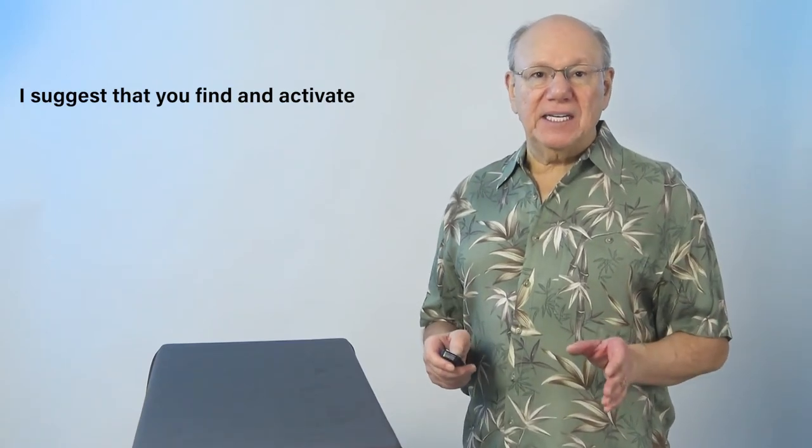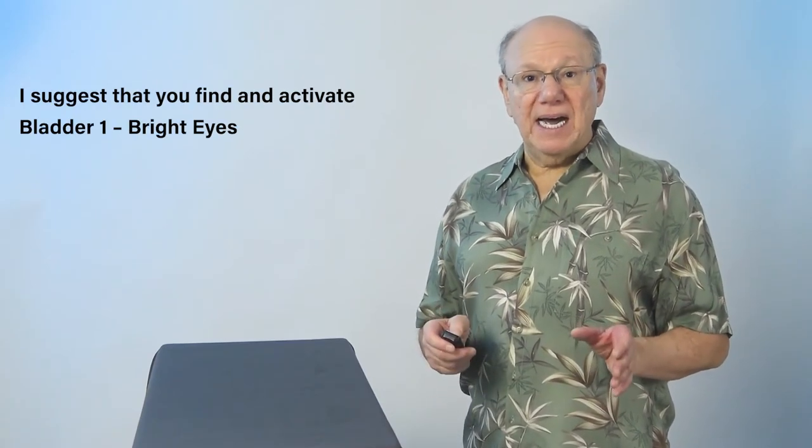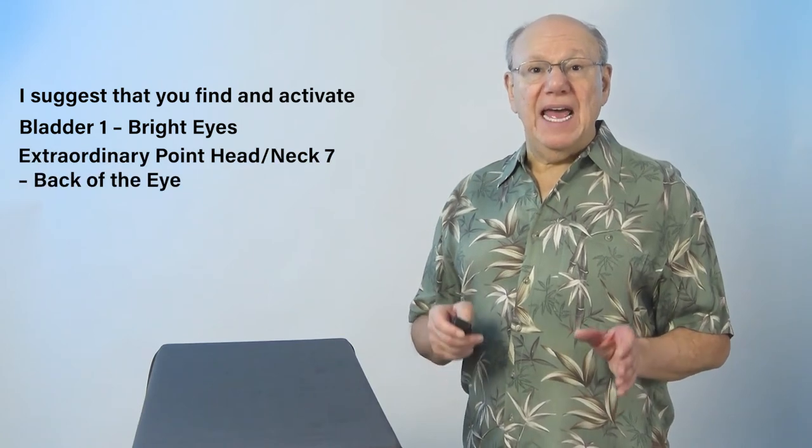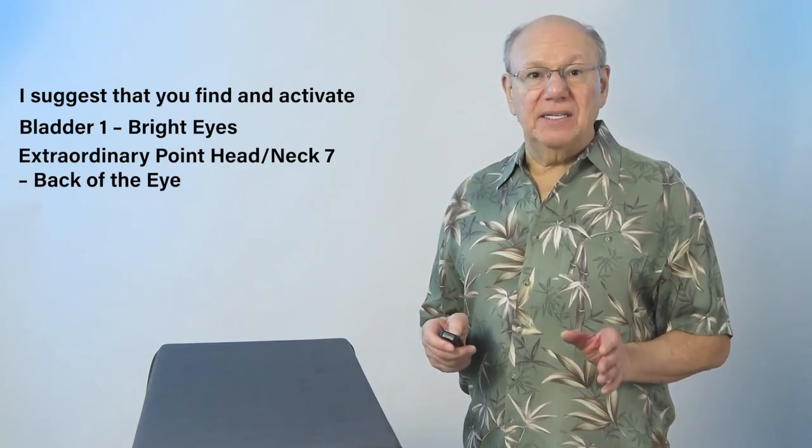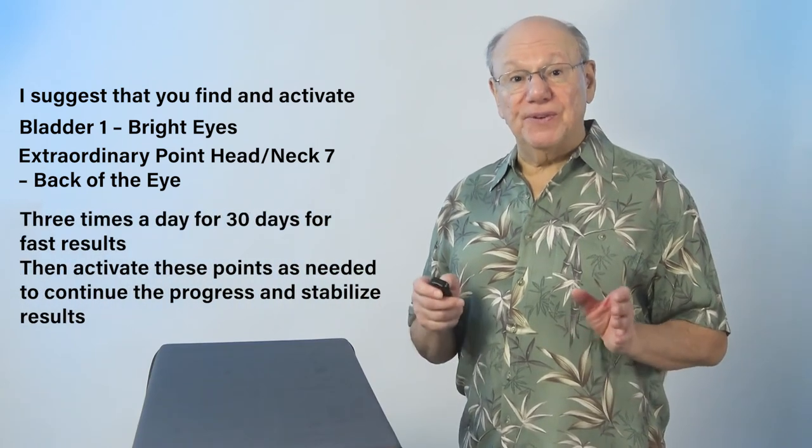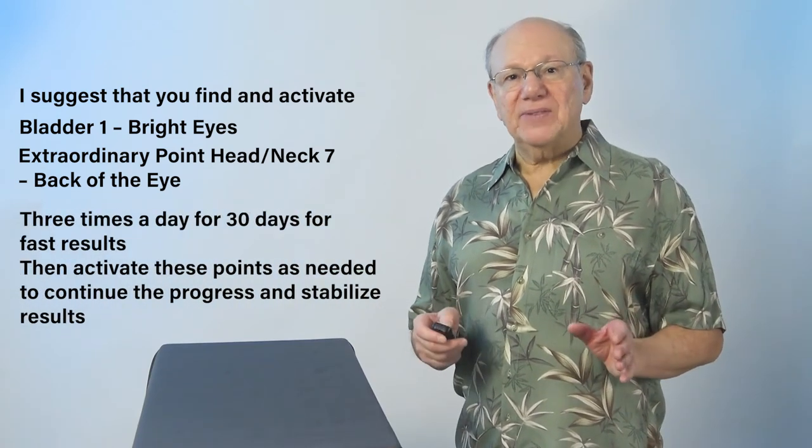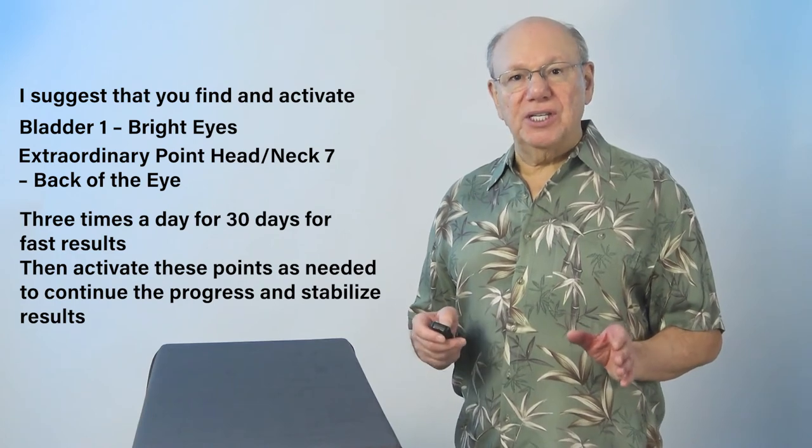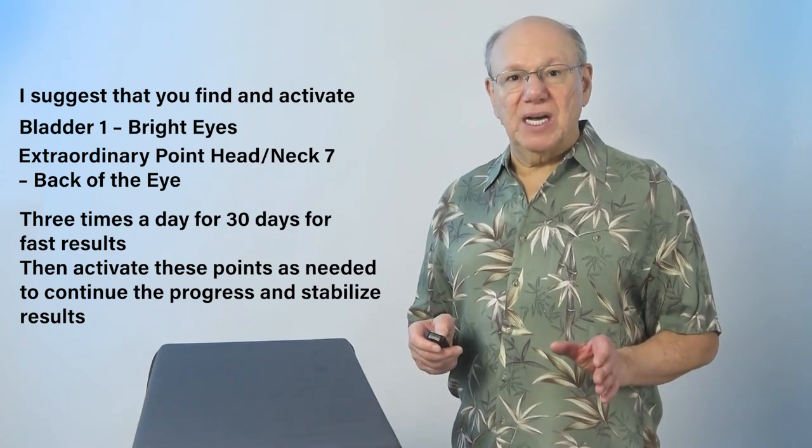Now, find and activate Extraordinary Point 7 on your other eye. If you have glaucoma, I suggest that you find and activate Bladder 1, Bright Eyes, and Extraordinary Point Head-Neck 7, Back of the Eye, three times a day for 30 days for fast results. Then, activate these points as needed to continue the progress and stabilize results.